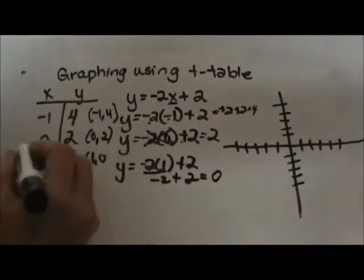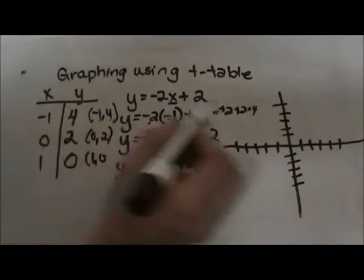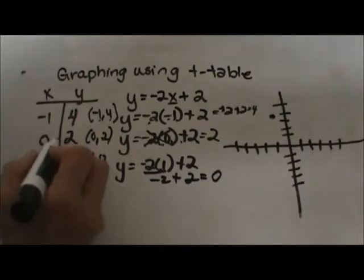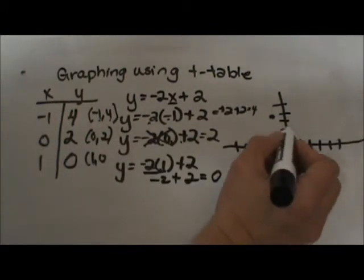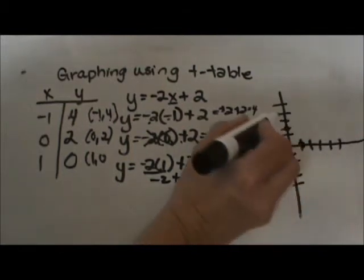So let's go over here and plug those values in. I'm going to graph left 1 up 4, over 1 up 4, 0, 2, left and right 0 up 2, and 1, 0, so over 1 up and down 0.